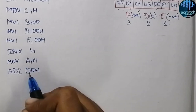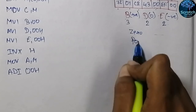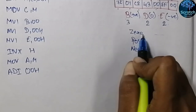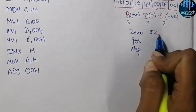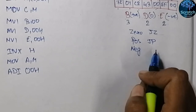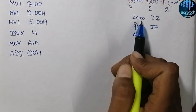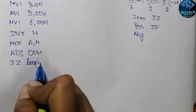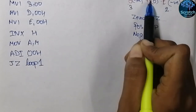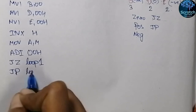Whenever we add something with 00H, there are 3 cases that may arise: either the number is 0, or the number is positive, or the number is negative. For checking the zero content we will use the JZ instruction — jump if zero — directing to Loop1. For checking a positive number we will use the JP instruction — jump if positive — directing to Loop2. Using the same JP instruction we will also check if the number is negative, as if it is not positive it must be negative.